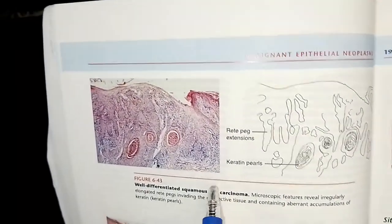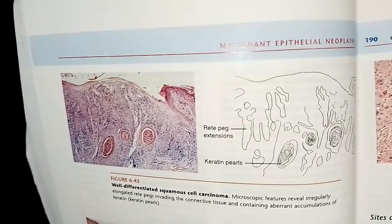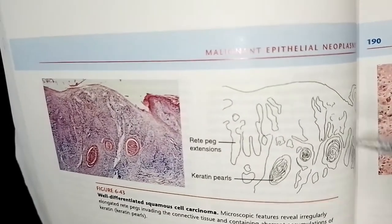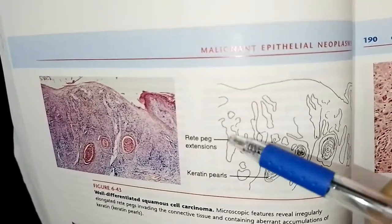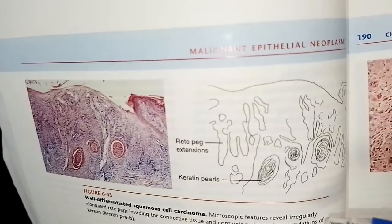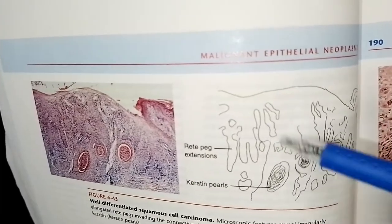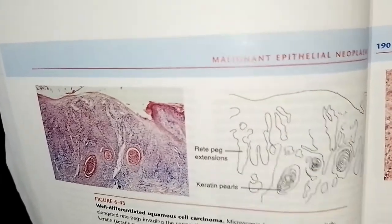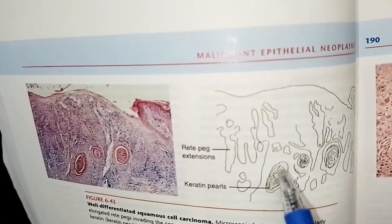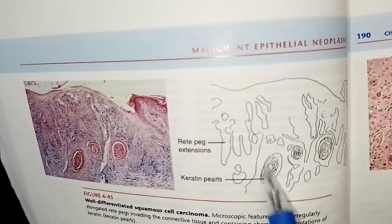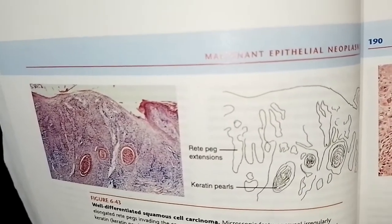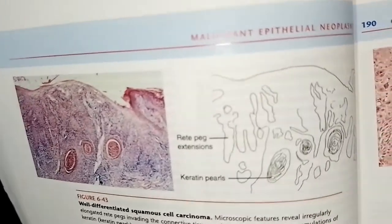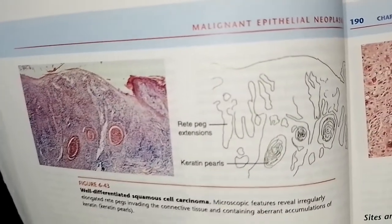Well-differentiated squamous cell carcinoma shows irregularly elongated rete pegs invading the connective tissue, and they can also contain keratin pearls — accumulations of keratin.